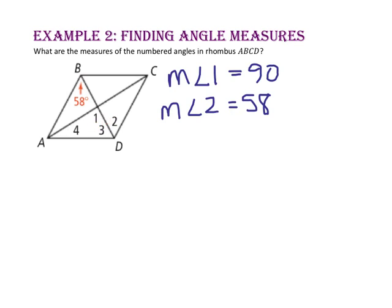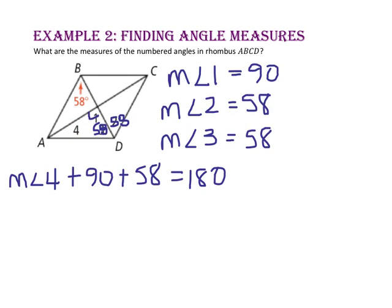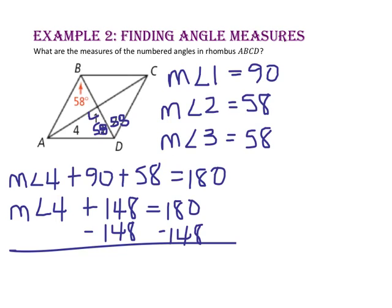To find the measure of angle 3, we use the fact that the diagonals of a rhombus bisect the angles. Since angle 2 measures 58 degrees, angle 3 must also equal 58 degrees. To find angle 4, we use the triangle angle sum theorem with the 90-degree angle and the 58-degree angle: angle 4 plus 148 equals 180. Subtracting 148 from both sides, the measure of angle 4 equals 32.